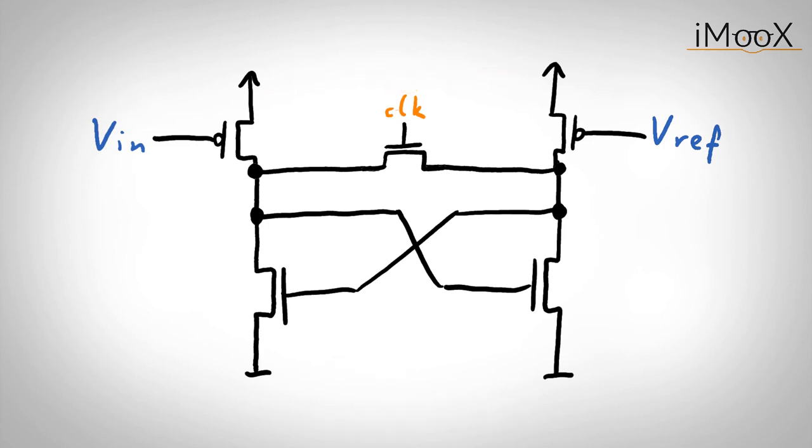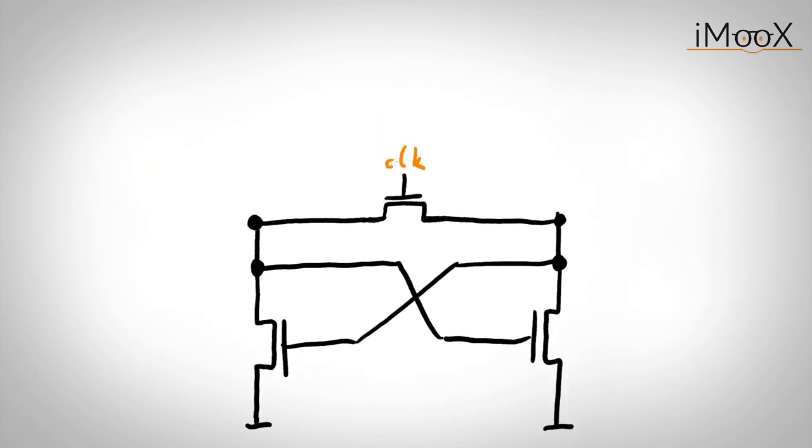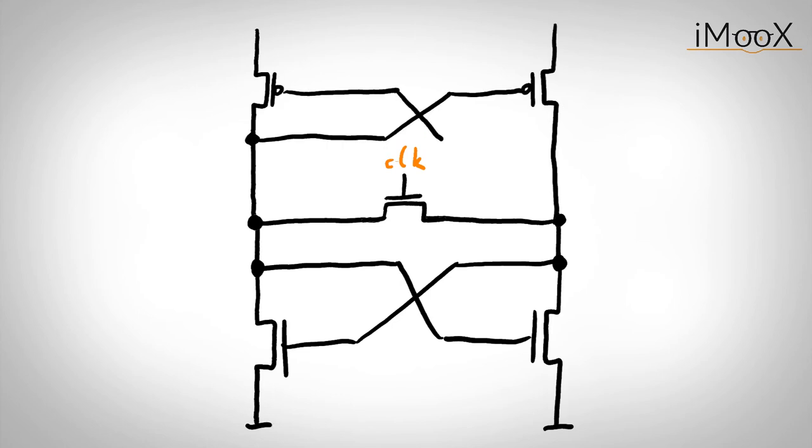To assure that no static current is flowing after the decision was made, we can extend our latch with another cross-coupled transistor pair using PMOS transistors. Furthermore, we need to add switches in series to the PMOS input transistors.